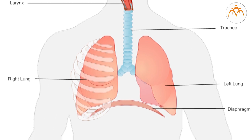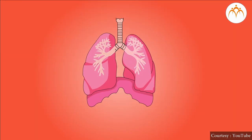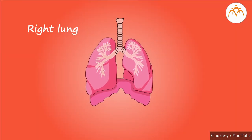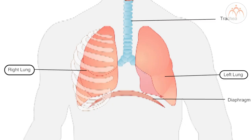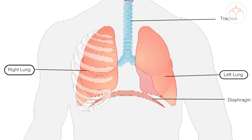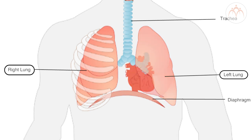There are a pair of lungs in our body - one right lung and one left lung. These lungs are present in the thoracic cavity or chest cavity on either side of the heart. The right lung is larger in size than the left one. This is because the left lung shares space of the thoracic cavity with the heart, hence it is smaller in size.